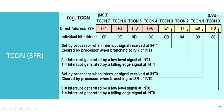Out of the lower four bits, IT0 and IT1 bits are related to external interrupt 0 and external interrupt 1 respectively. The use of this bit is to decide the type of signal that will generate an interrupt. When this bit is 0, a low level signal on external interrupt 0 will generate an interrupt. When IT0 is equal to 1, a falling edge signal on external interrupt 0 pin will generate an interrupt.